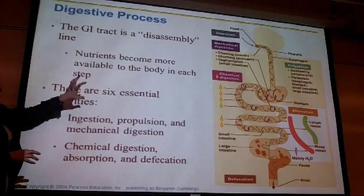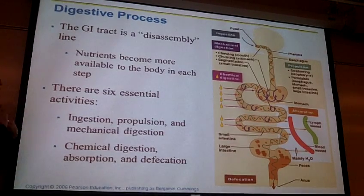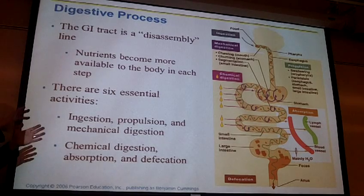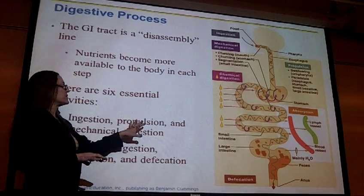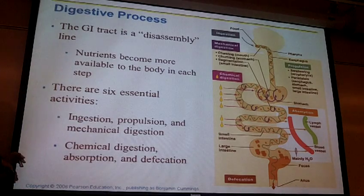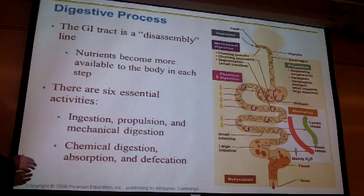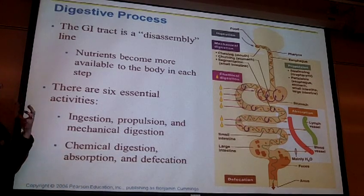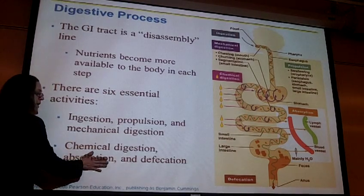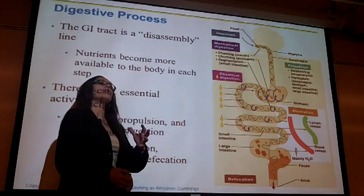The essential activities of the GI tract are: ingestion — getting food into our body through the mouth — and then propulsion. We have to swallow it, and then peristaltic contractions move it forward. Propulsion includes both swallowing and involuntary peristaltic contractions. We also have mechanical digestion, breaking food into smaller pieces, followed by chemical digestion with enzymes. Once we have small enough particles — amino acids, monosaccharides, fatty acids, and glycerol — we can absorb them. Anything left over is defecated.